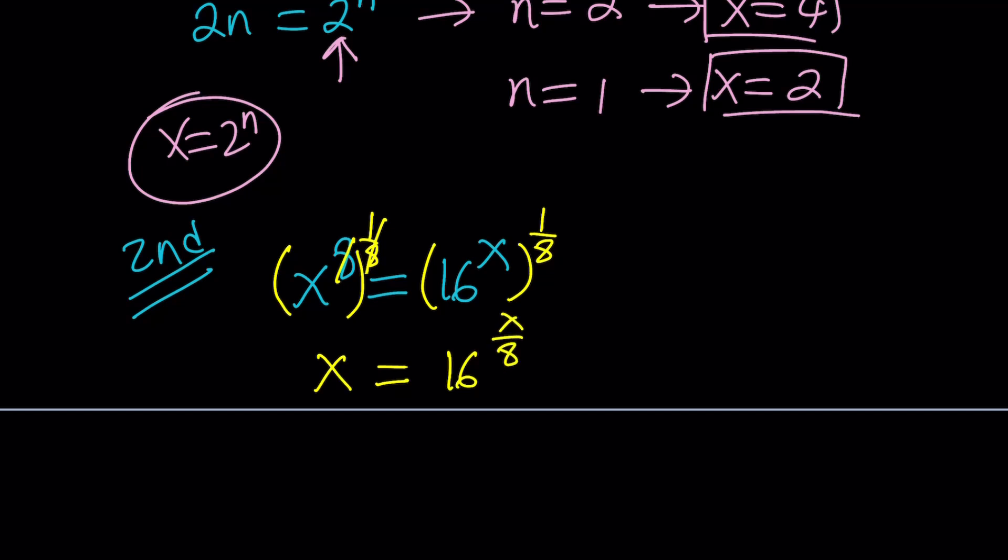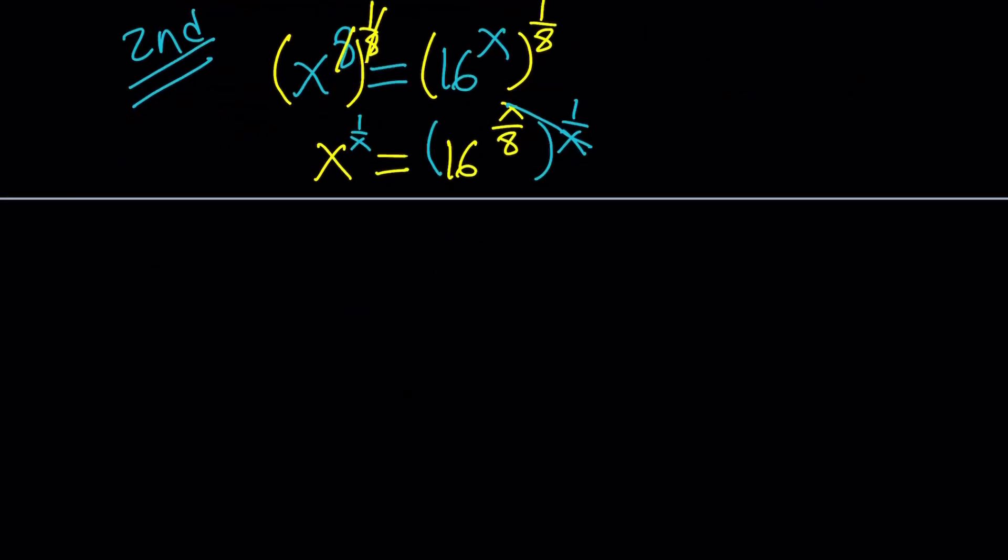Now, we want to get all the x's on the same side, so why don't we just raise both sides to the power 1 over x. We could do this in one step if you just raised both sides to the power 1 over 8x, and that would basically give the solution right away. But x's cancel out here, leaving us with something super duper nice. We get x to the power 1 over x equals 16 to the power 1 over 8.